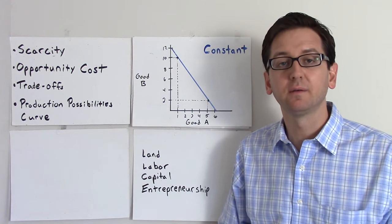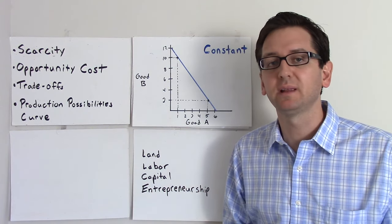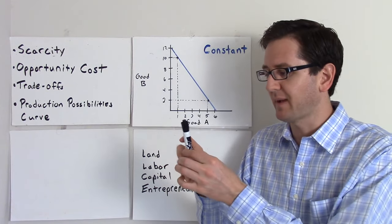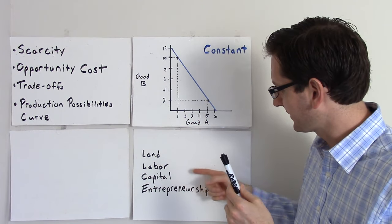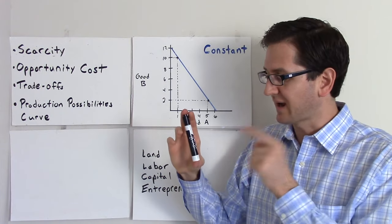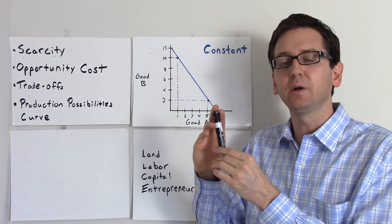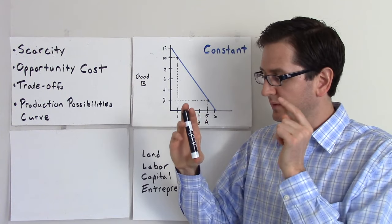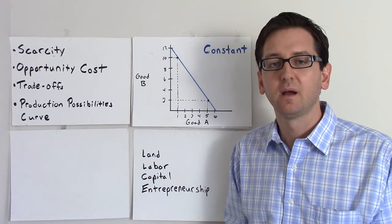Scarcity is the lack of abundance of resources. Because of scarcity, we incur explicit and implicit costs when we produce, and every decision we make has some sort of trade-off. For example, if I decide to manufacture this marker, it has explicit costs — money I have to pay for land, labor, capital, and entrepreneurship. But there are also implicit costs, called opportunity costs. I could have put my resources toward manufacturing three pencils instead. That is my implicit cost — giving up that opportunity in order to manufacture this marker.